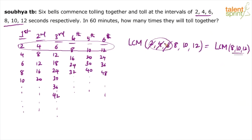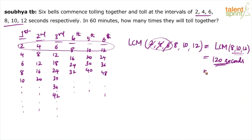Even if you include 2, 4 and 6, you get the same answer — but why make it unnecessarily time-consuming? The LCM of 8, 10 and 12 is 120. So all 6 bells will ring together after 120 seconds, which is equal to 2 minutes. After every 2 minutes, the 6 bells will ring together.